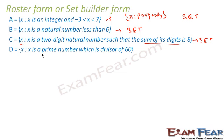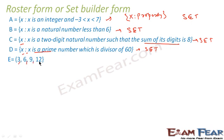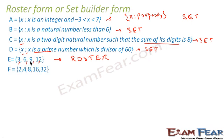Set D: {x : x is a prime number and a divisor of 16} — this is set builder form since it defines a property. Set E: {3, 6, 9, 12} — since all elements are listed, separated by comma, and enclosed within braces, this is roster form.